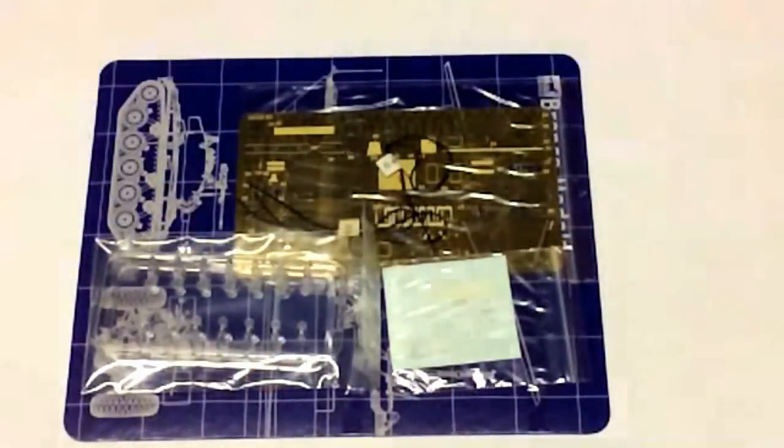This is the etched brass fret, some of the clear parts and the decal sheet. The decal sheet is far smaller than the previous Buffalo release. I'm sure some of the original marking options would actually be applicable to this kit as well.